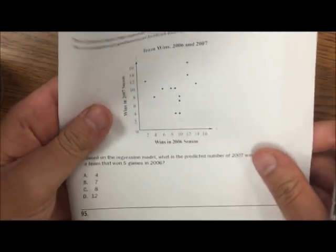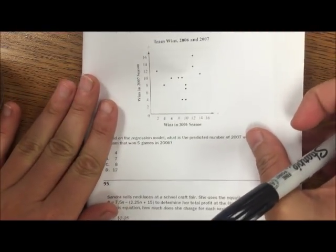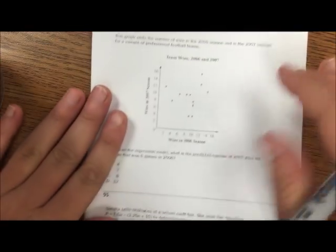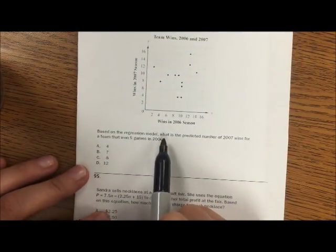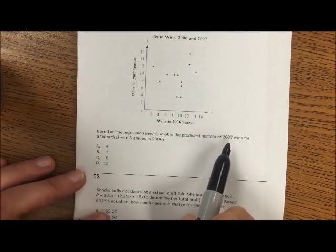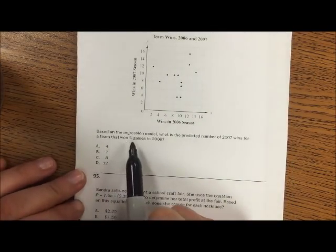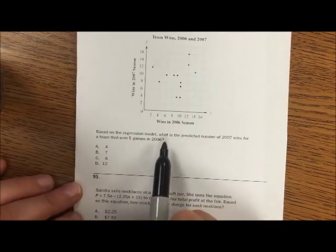94. This graph plots the number of wins for the 2006 and 2007 seasons for a sample of professional football teams. Based on the regression model, what is the predicted number of 2007 wins for the team that won five games in 2006?